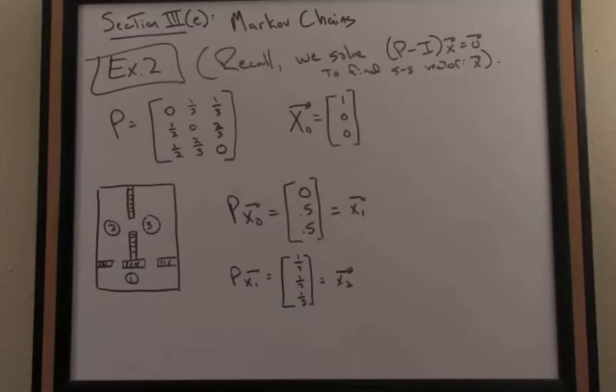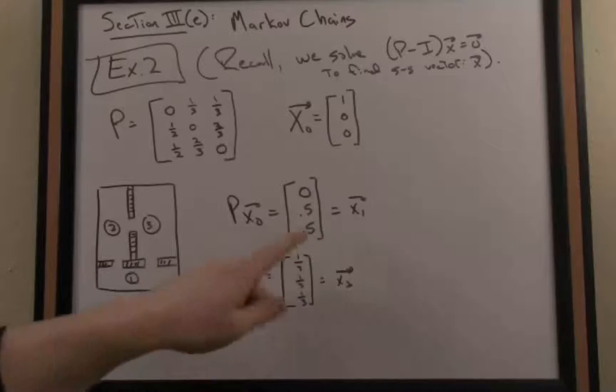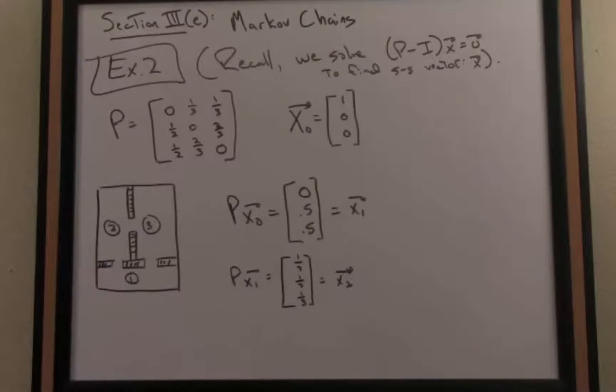If I want to figure out my probability vector after one time iteration, I just multiply on the left by my matrix P, and then I get the following probability vector. After one step, we have probability one-half that the mouse is in room two and probability one-half in room three. If I turn the crank again and see what the probability looks like after two iterations, I multiply again by P and get this new state vector: one-third, one-third, one-third, a uniform probability vector.